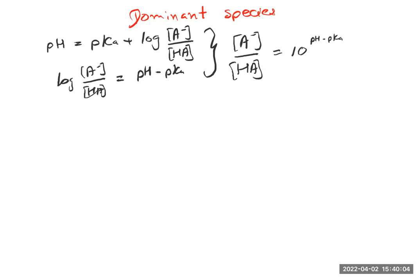What we can learn from this is: if the pH is greater than the pKa, then the value (pH minus pKa) is positive, meaning we have more of the numerator compared to the denominator. So if the pH is greater than the pKa, the base form is dominant.